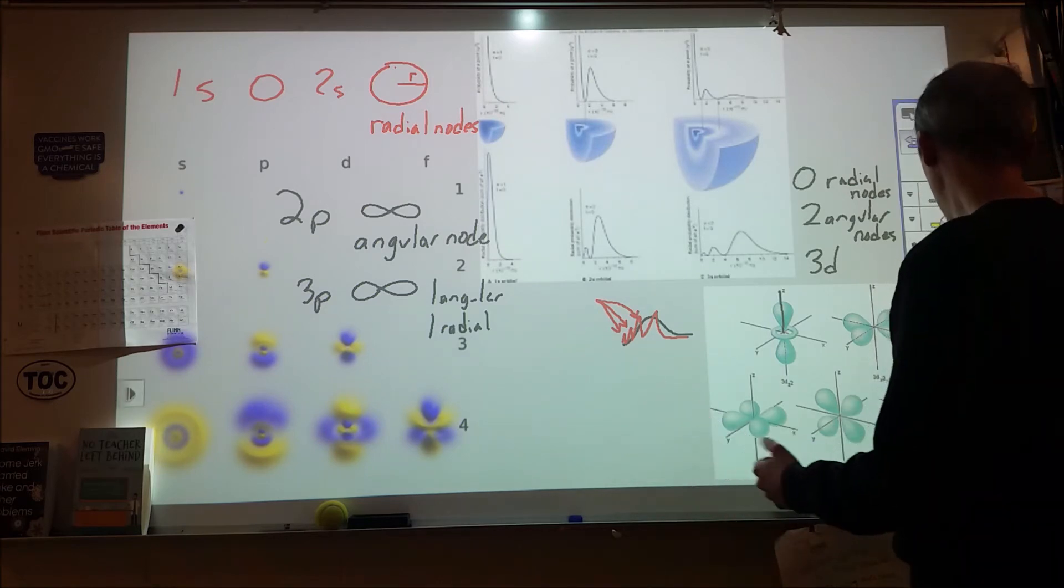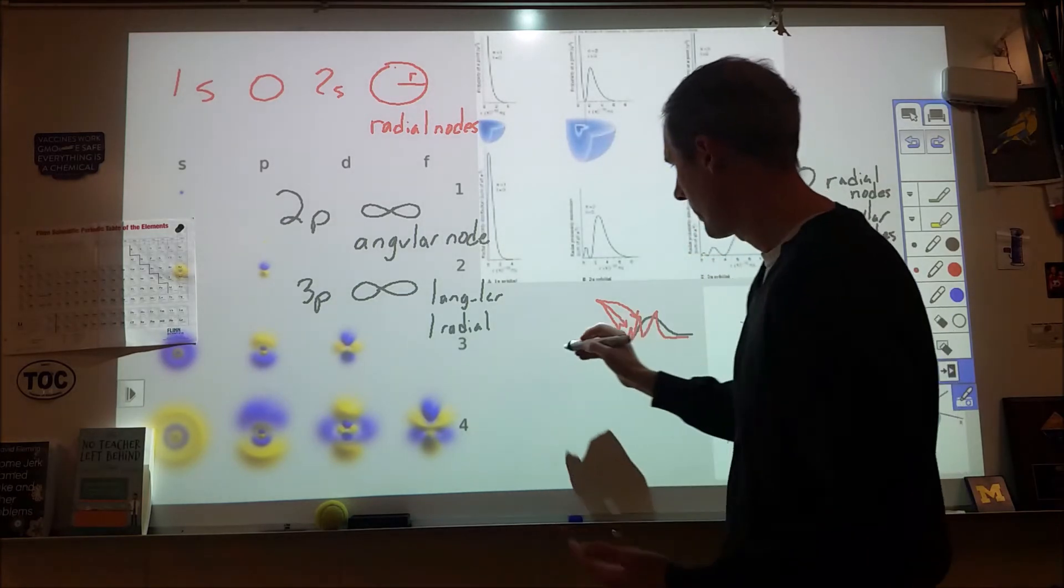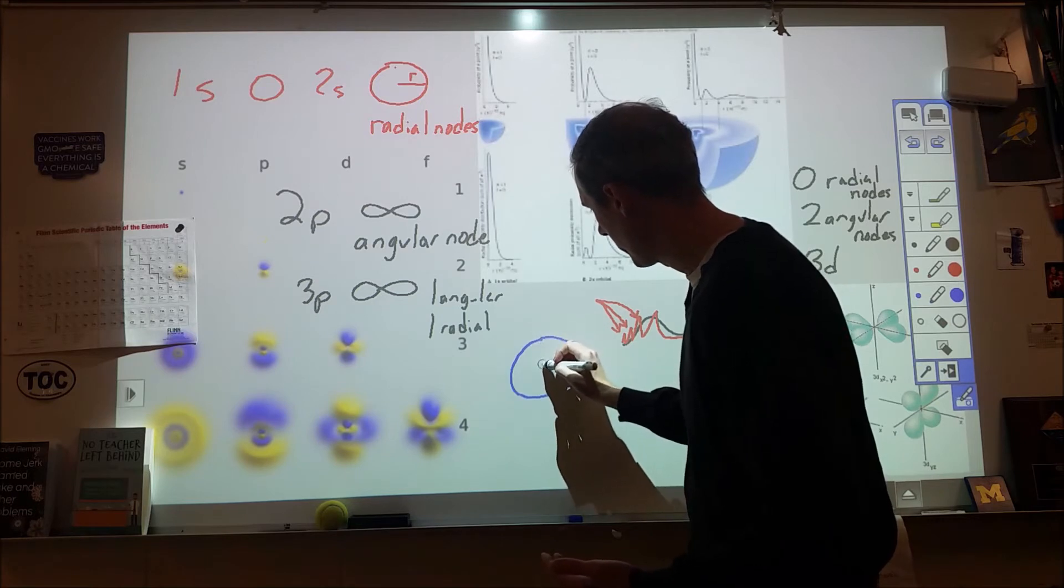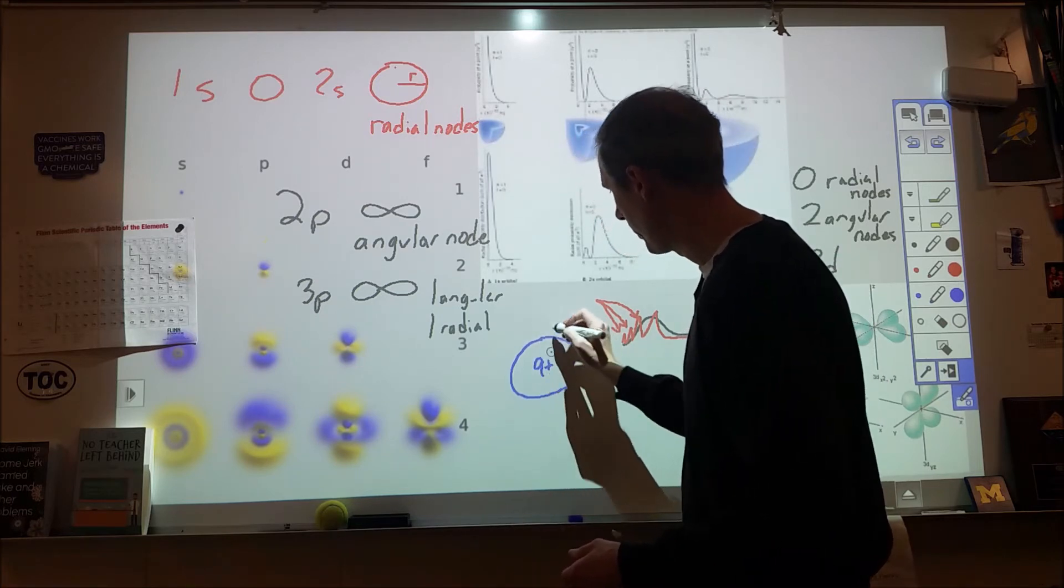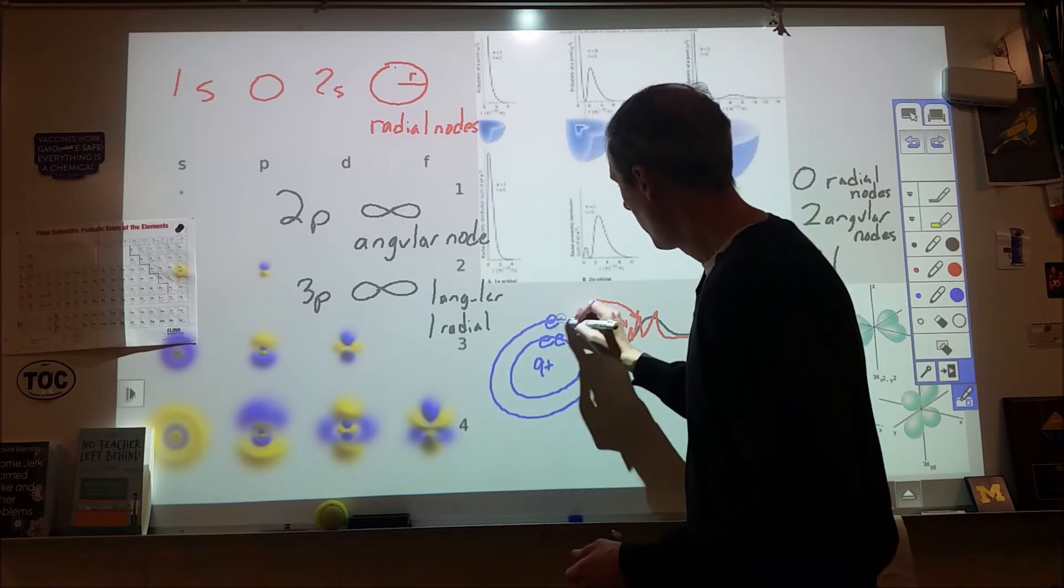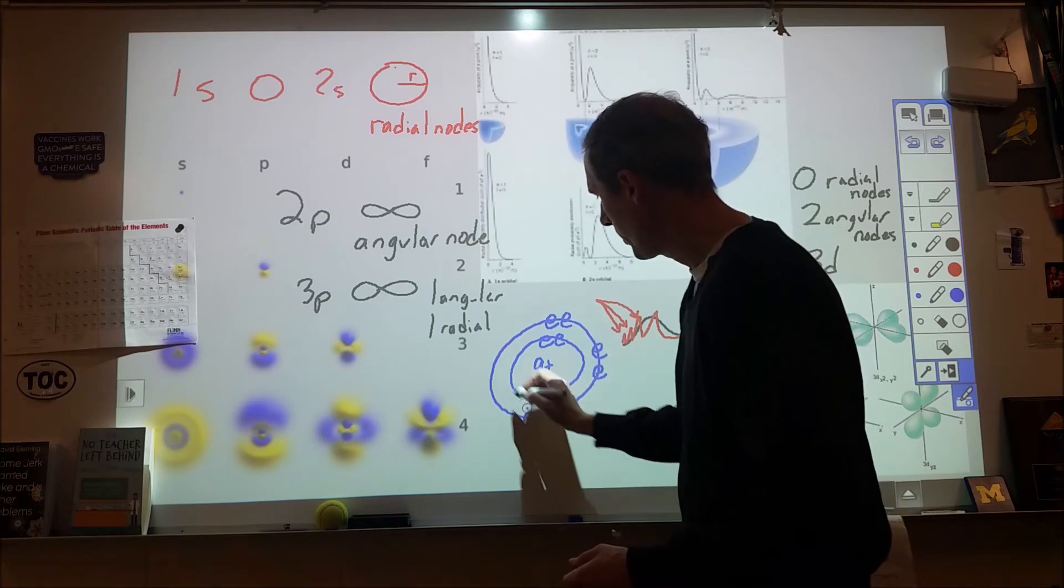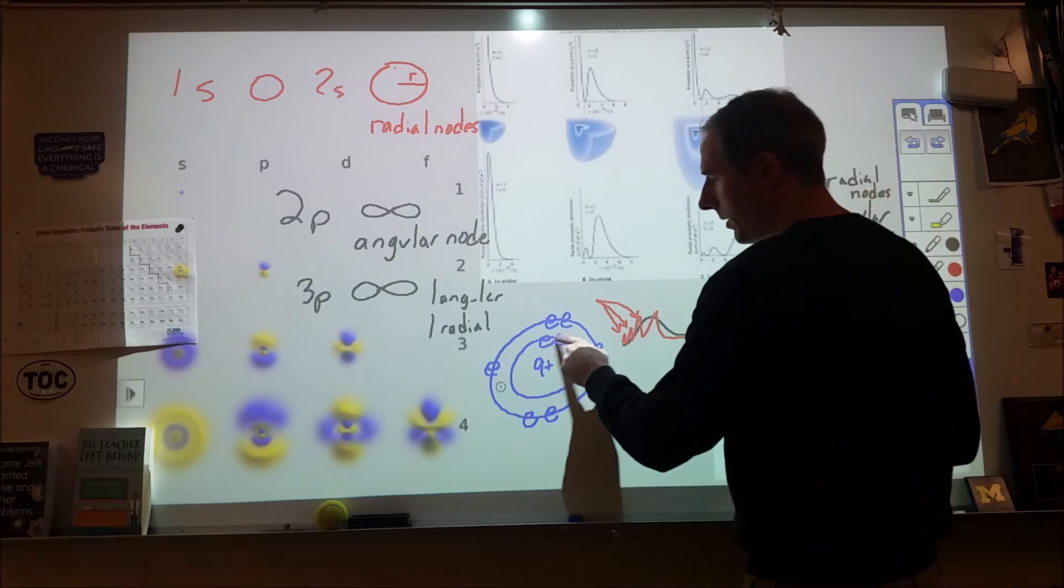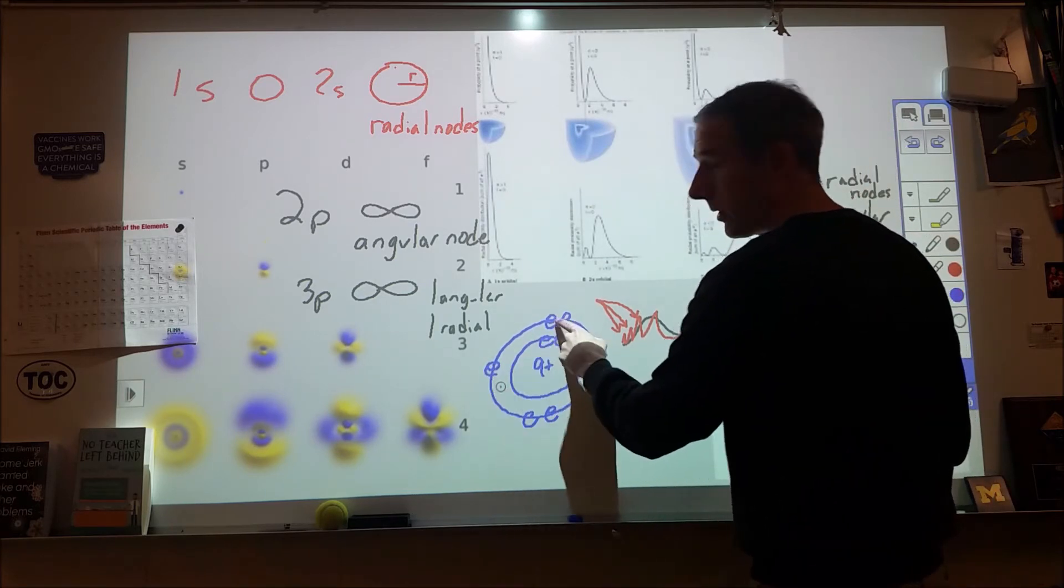Now why does that matter? Well, it turns out, I'm going to go Bohr model here, so sorry if that offends anyone here, but it illustrates the point really nicely. So here's our nucleus, let's say we're dealing with a chlorine atom, so nine protons, and here's our electrons.